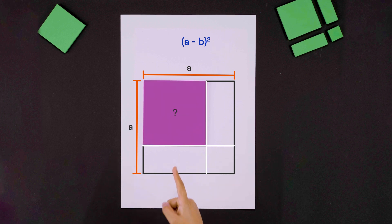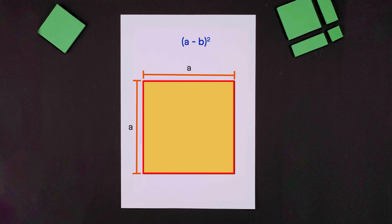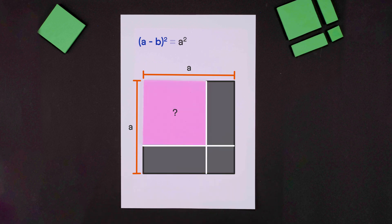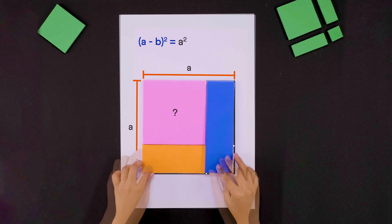To find the area of this square, we need to subtract this L-shaped area from this big square. Its area is a times a, that is a squared, and this L-shape can be thought of as made up of these two overlapping rectangles.